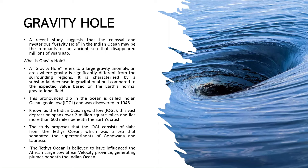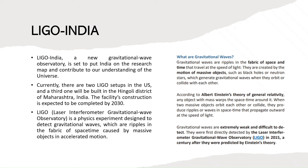Beneath the surface of the Indian Ocean, a mystery has been intriguing scientists — known as the gravity hole. A gravity hole refers to a large area where gravity is significantly different from the surrounding region, characterized by a substantial decrease in gravitational pull compared to the expected value based on Earth's normal gravitational field. This pronounced dip in the Indian Ocean is called the Indian Ocean Geoid Low or IOGL, first discovered in 1948. Studies suggest this massive depression might be a remnant of the ancient Tethys Ocean, which acted as a bridge between the ancient supercontinents of Gondwana and Laurasia. Slabs from the Tethys Ocean may be influencing the geological dynamics beneath the Indian Ocean.